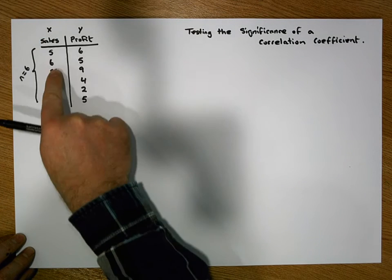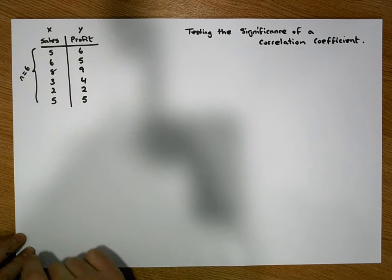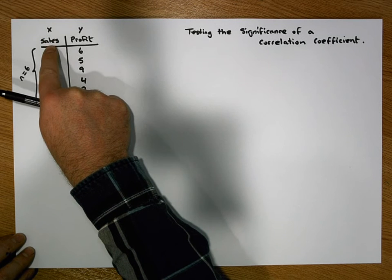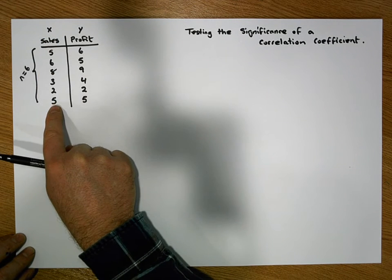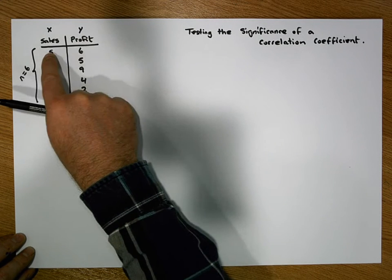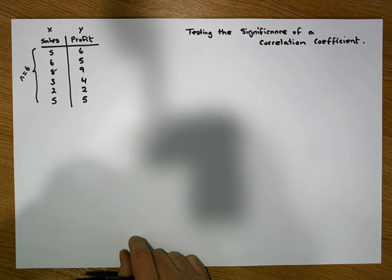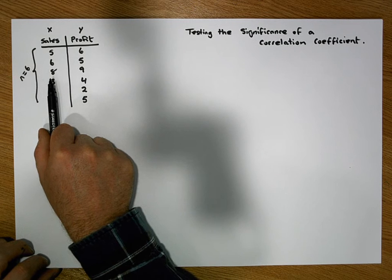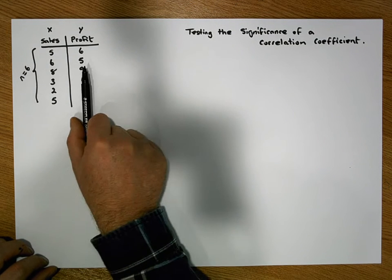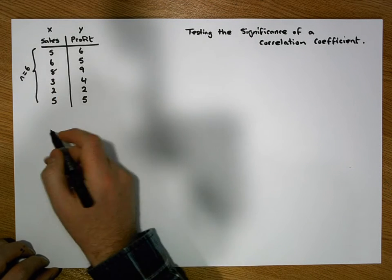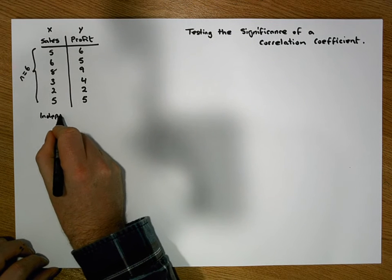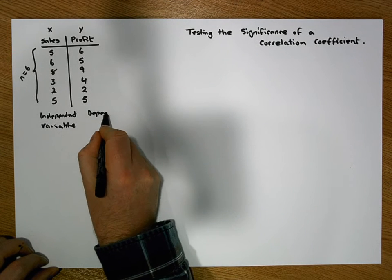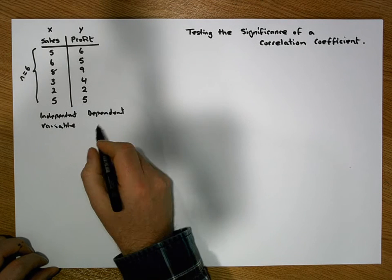We have our X variable values down the first column and our Y variable values down the second column. Over a particular period of time, for a particular organization or business, we monitored how many sales of a particular product they achieved on particular days, and we also monitored what profit they made. The question we really have here is: is there a relationship, an association, or a correlation between sales and profit? In this instance, sales will be our independent variable.